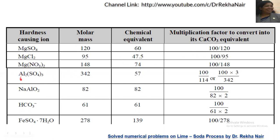There is an exception: aluminum sulfate, Al₂(SO₄)₃. Molecular weight = 2×27 + 3×(32 + 16×4) = 54 + 288 = 342. Equivalent weight = 342/6 = 57. Multiplication factor = 50/57, or 100/114. So 100/114 is the multiplication factor for aluminum sulfate.